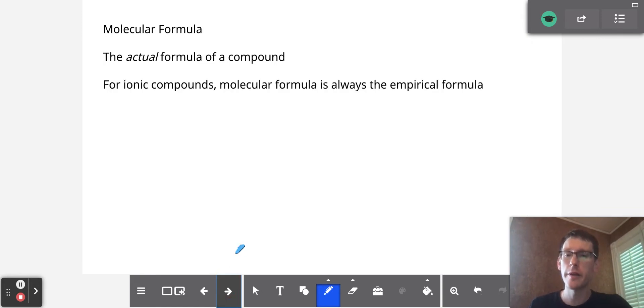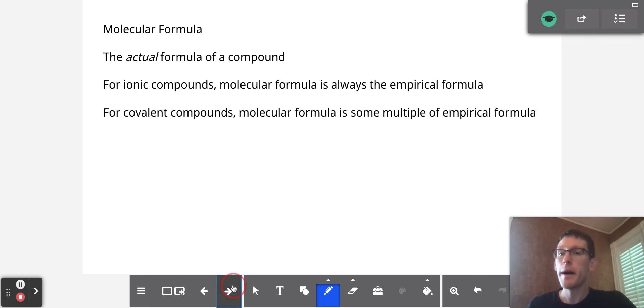For ionic compounds, the molecular formula will always be the same as the empirical formula. But in the case of covalent compounds, the molecular formula is going to be some multiple of the empirical formula.